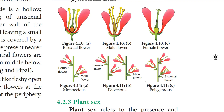The sex of the flower is determined by the presence and absence of androecium and gynoecium. If the flower contains both, it is a perfect flower. If it contains only one essential whorl, it is an imperfect flower. A flower with androecium alone is called a male flower or staminate flower. A flower with gynoecium alone is a female flower or pistillate flower. The sex of the plant is determined by the presence and distribution of flowers of different sexes.